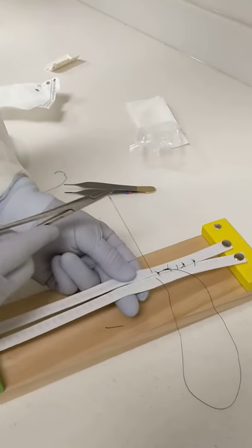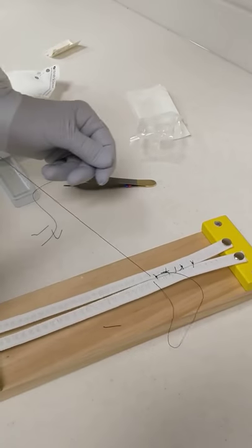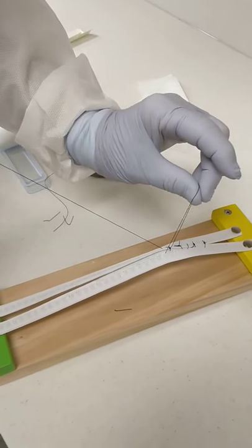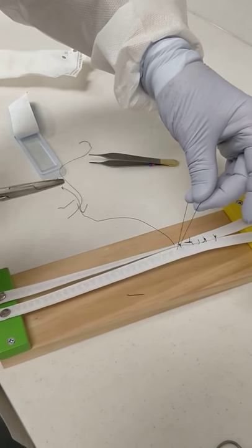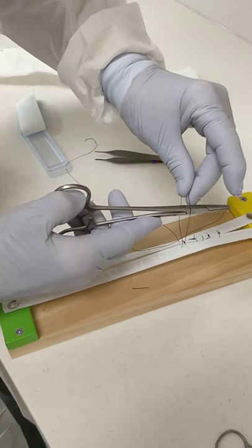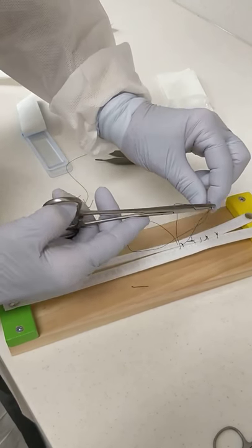The locking suture is like having several interrupted sutures that are all tied together. So, bring this through. Now, you're going to take the loop end and you're going to twist it. And you're going to put the needle back through the back side of that loop, like that.